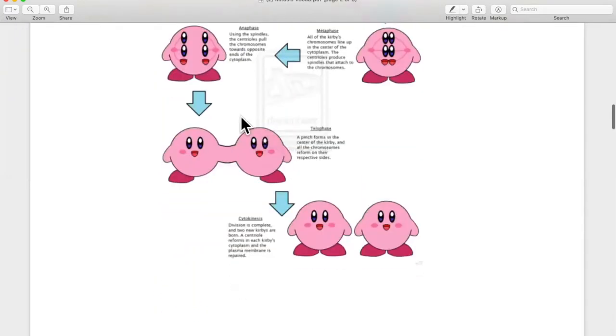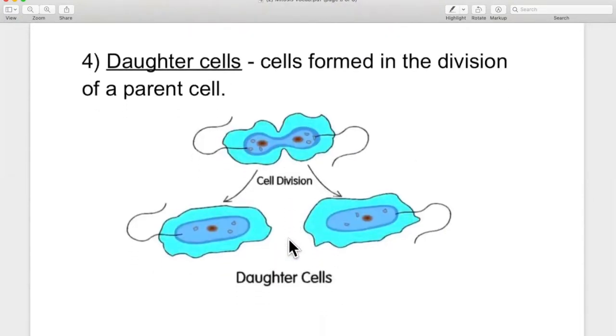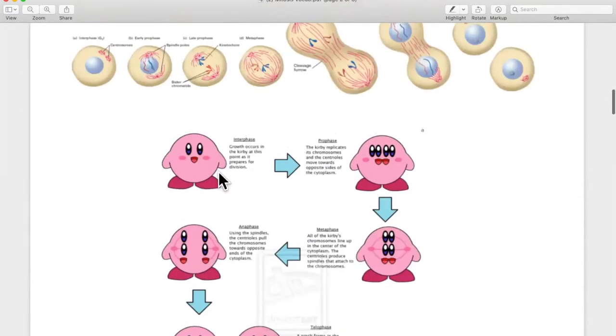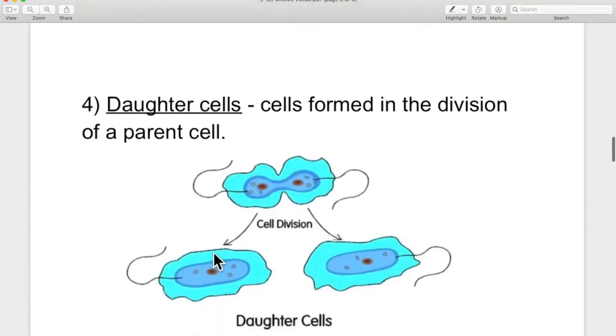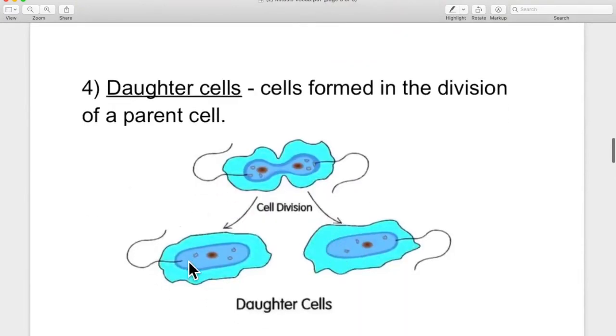And of course, Kirby is going to split down the middle. And we have two Kirbys. That's what your cells do. The eyes and the mouth were your DNA. So each side gets DNA. And that is what we call daughter cells. We started off with one parent cell, Kirby up here, and we end up with two daughter cells, two Kirbys. And each daughter cell gets the exact same DNA that the parent cell had.